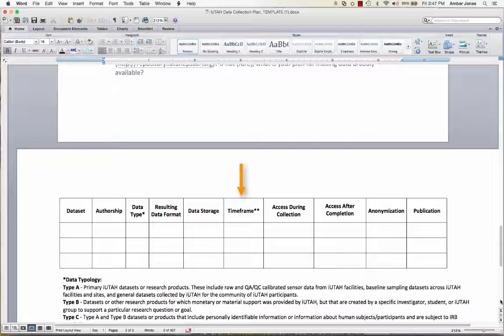Access during collection. Here you specify whether there are any restrictions on access to the data during collection. This is particularly relevant for data sets that involve human subjects and are subject to Institutional Review Board.